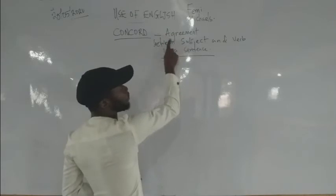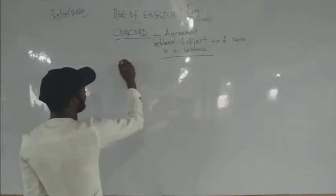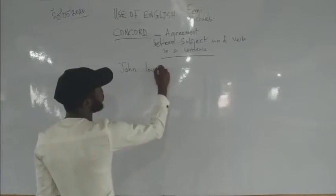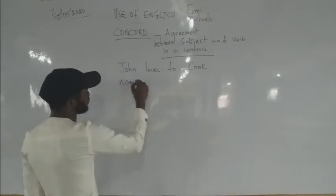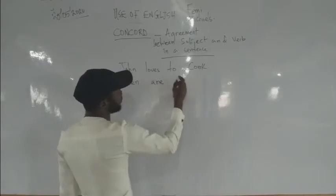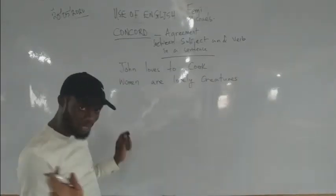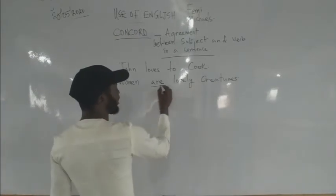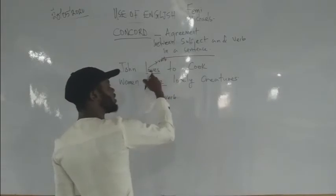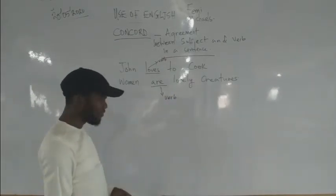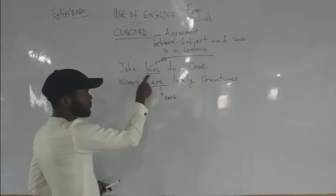I'm going to give you a simple example that explains subject and verb together. When I say 'John loves to cook' — loves here is the verb, a direct verb showing a direct action. Then we have 'Women are lovely creatures.' Here the verb 'are' does not show a direct action in the same way, but it is still a verb.